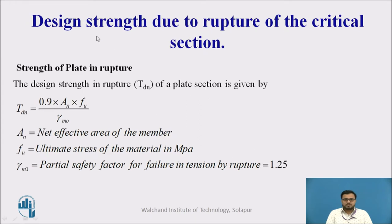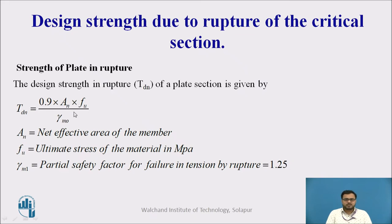Another criterion is design strength due to the rupture of the critical section. For a plate, the design strength due to rupture is given by TDN = 0.9 · AN · Fu / γM1, where AN is the net effective area of the member, Fu is the ultimate stress of the material, and γM1 is the partial safety factor for failure in tension by rupture, which equals 1.25. We will now see what is meant by net effective area and how to calculate it.